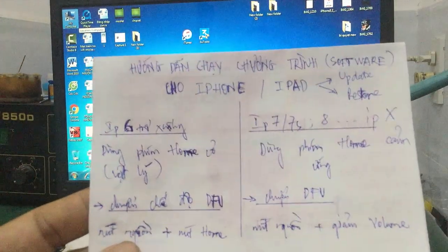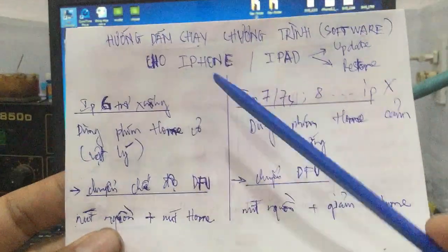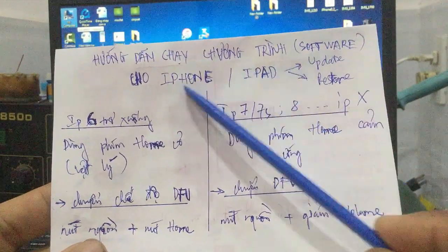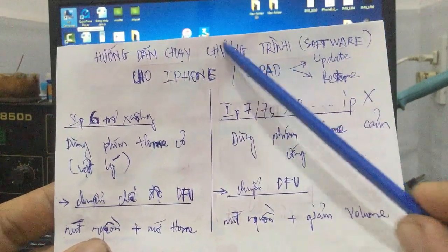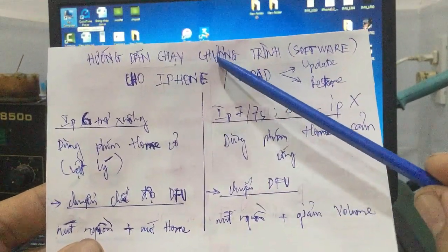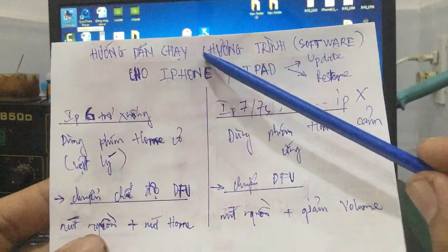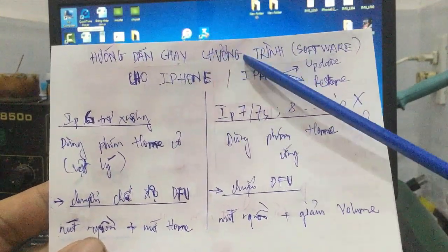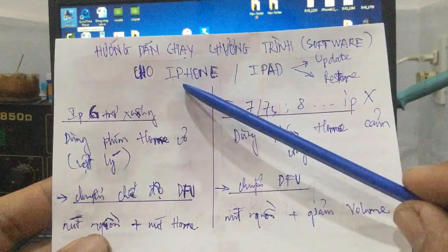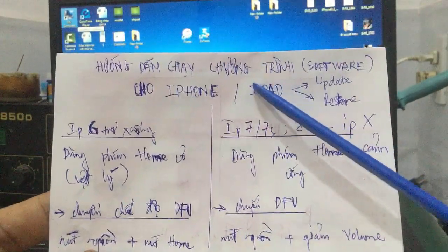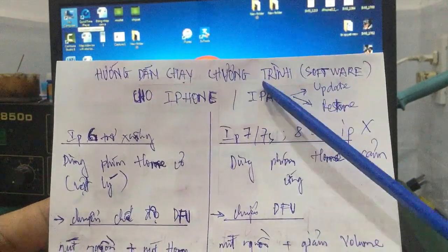Đây là cách hướng dẫn cho các bạn để chạy chương trình - software cho iPhone iPad. Chạy chương trình đó có nghĩa là bên dưới chuyên ngành người ta gọi là Blacksync, prom, hay là chạy software.